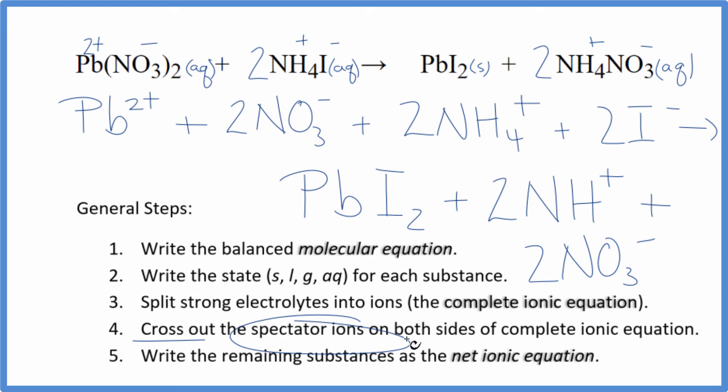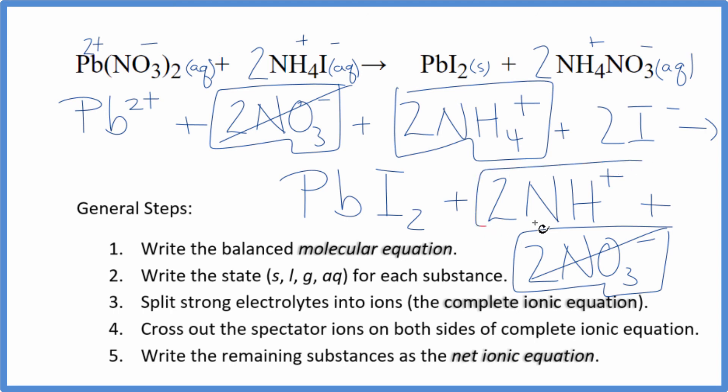Now we can cross out the spectator ions. They're on both sides. So I'm looking at the reactants and then the products. I have 2 nitrate ions here in the reactants. And down here, I have 2 more in the products. Spectator ions. Cross them out. 2 ammonium ions here in the reactants. Again, in the products. Get rid of those. But what's left, that's the net ionic equation for Pb(NO3)2 plus NH4I. I'll clean this up and write the states in. We'll have our net ionic equation.